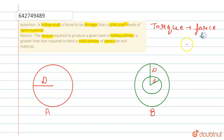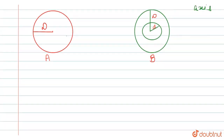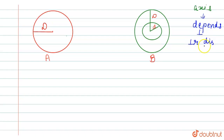Torque depends on the perpendicular distance from the point and the force exerted, which in turn depends on the mass of an object.